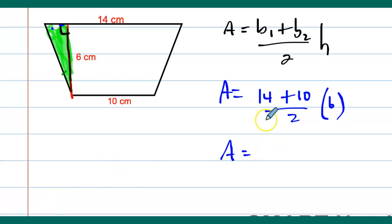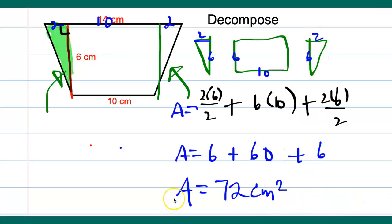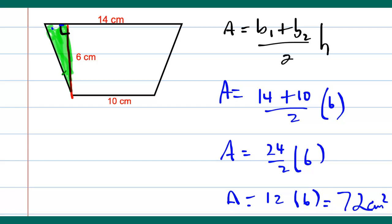So that's going to be 24 divided by 2 times 6. So 24 divided by 2 is 12 times 6, to give us 72 square centimeters. So it's the same. It's also 72. So no matter what way you want to do it, you will still get the same answer. All right, you have an option.